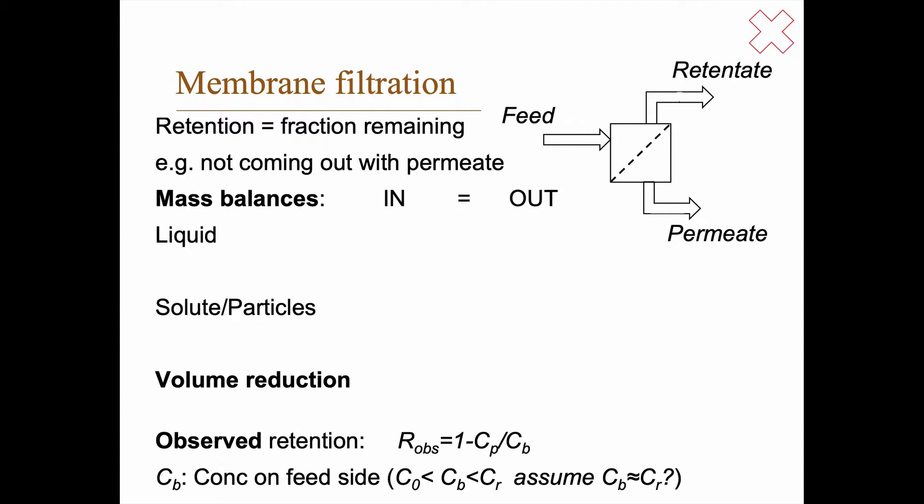You can pause here to try to think for yourself for a while what this will look like. Okay, we think of a steady state case, so in equals out, and for the liquid you have a V₀ that comes in. And the volume coming out is the volume of the retentate plus the volume of the permeate. So that's pretty straightforward.